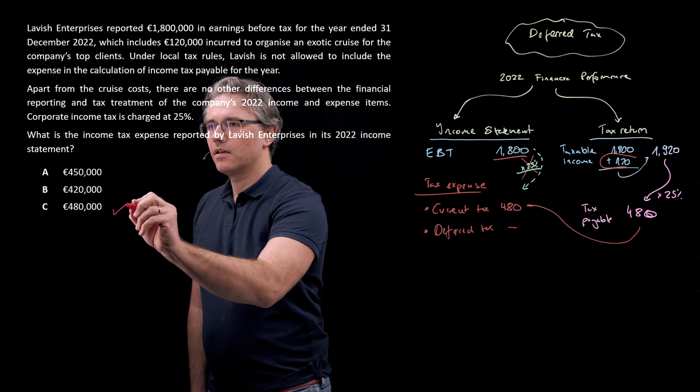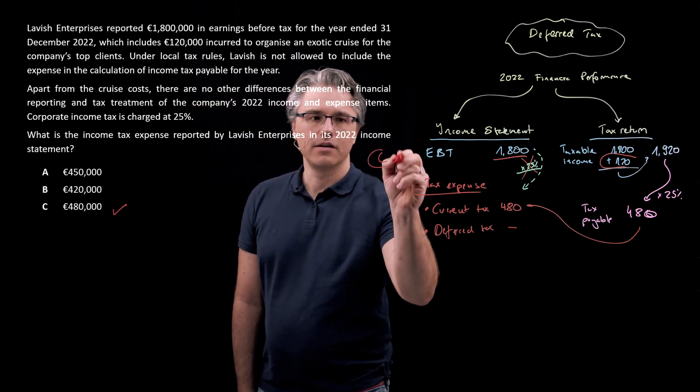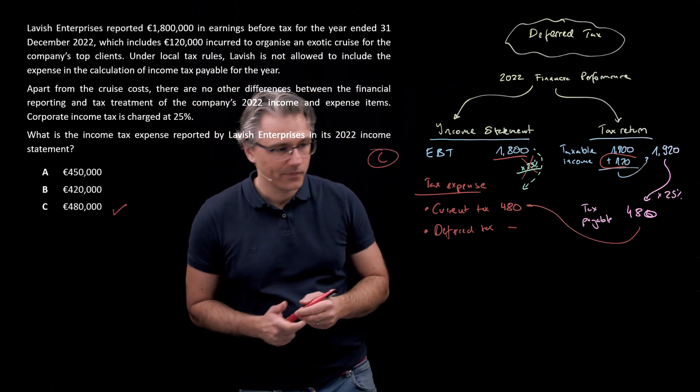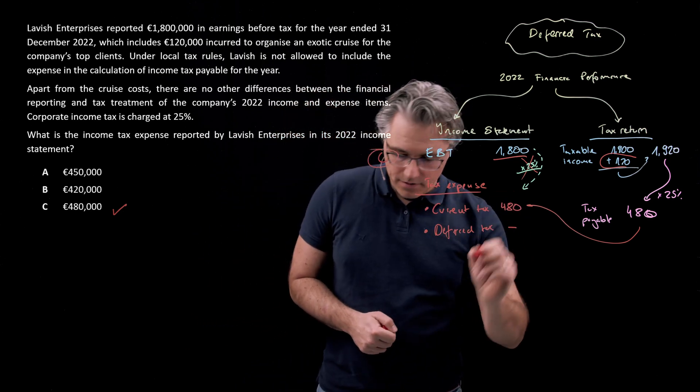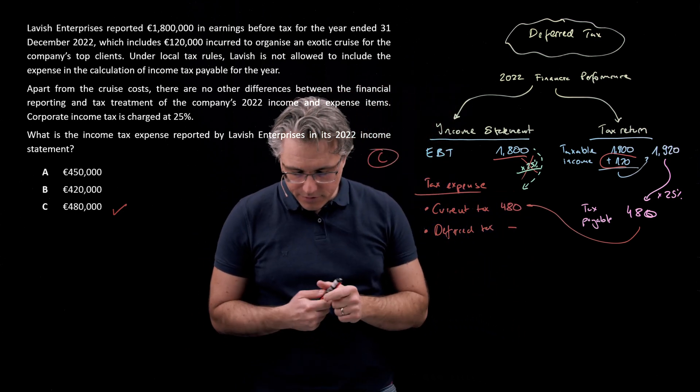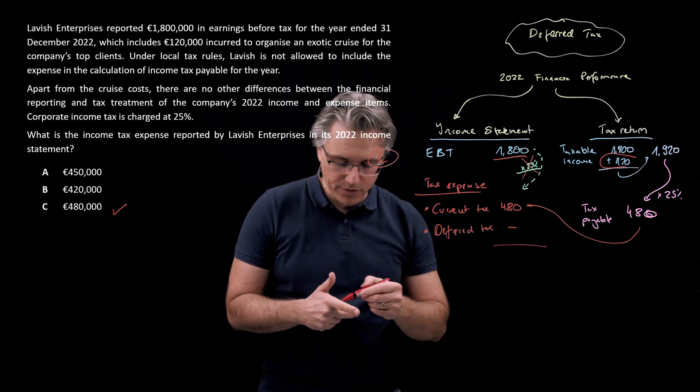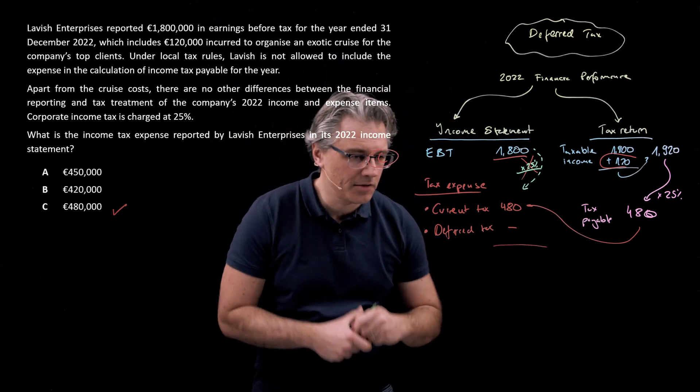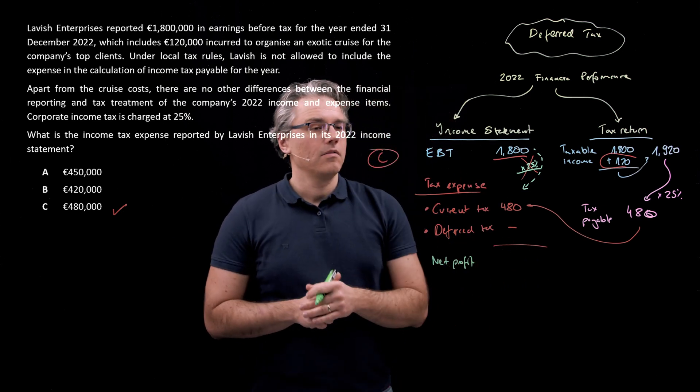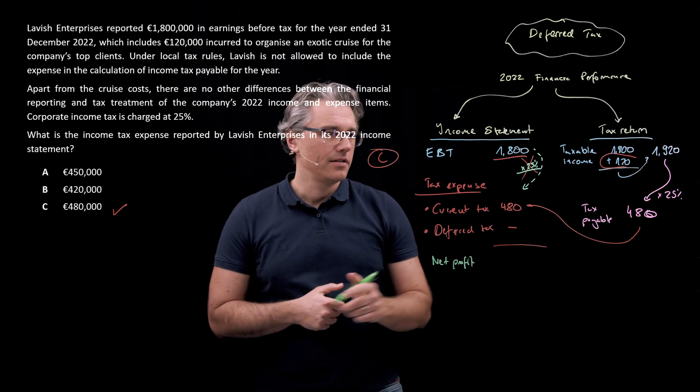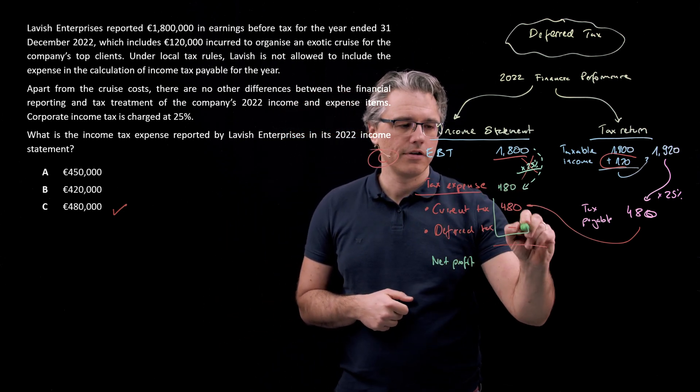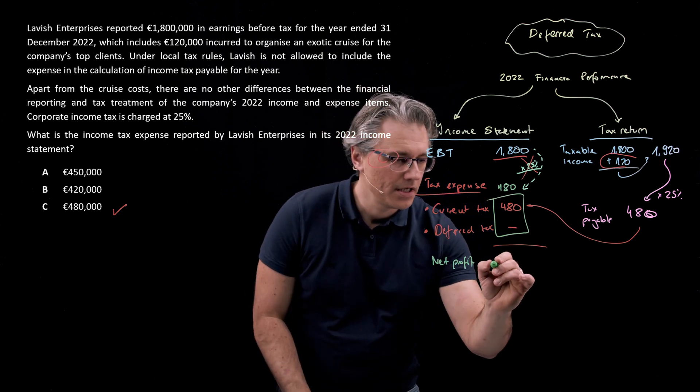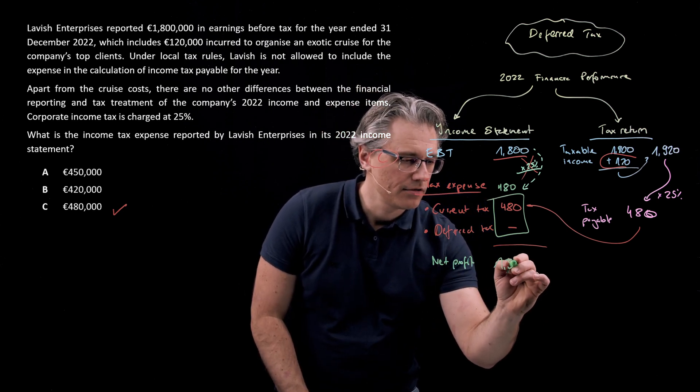So I'm going to pick answer C over here as the correct one. And say, okay, tax expense is 480. And if we therefore compute the net profit, 1,800,000 minus a tax expense of effectively 480,000, we get 1,320,000.